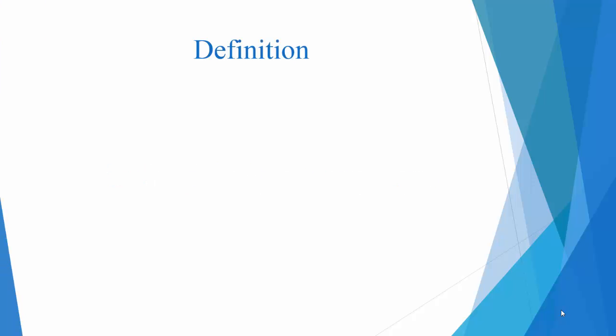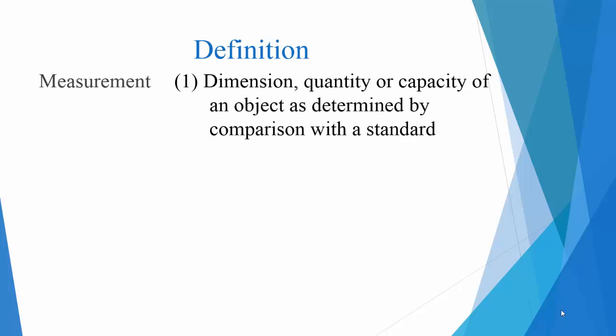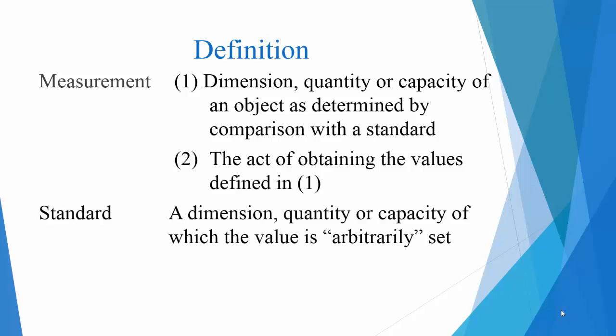So we're going to start with some definitions. What is a measurement? It is officially dimension, quantity, or capacity of an object as determined by comparison with a standard, or you can use it as a verb, and it's the act of obtaining the values as defined in one. And what's a standard? It is some dimension, quantity, or capacity where the value is arbitrarily set. So what does this all mean in real English?